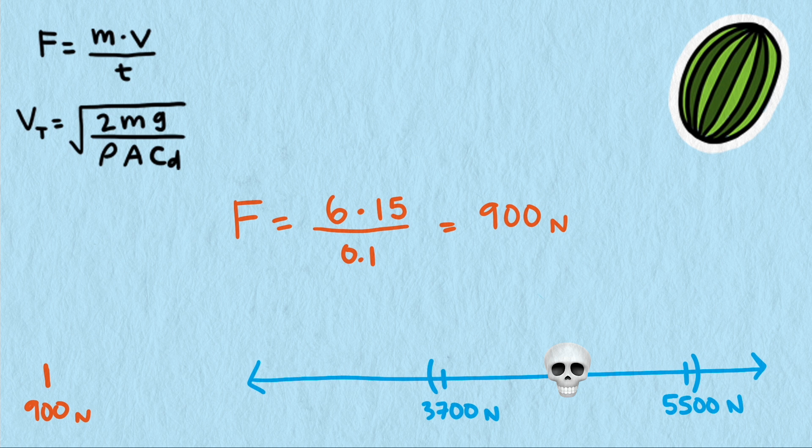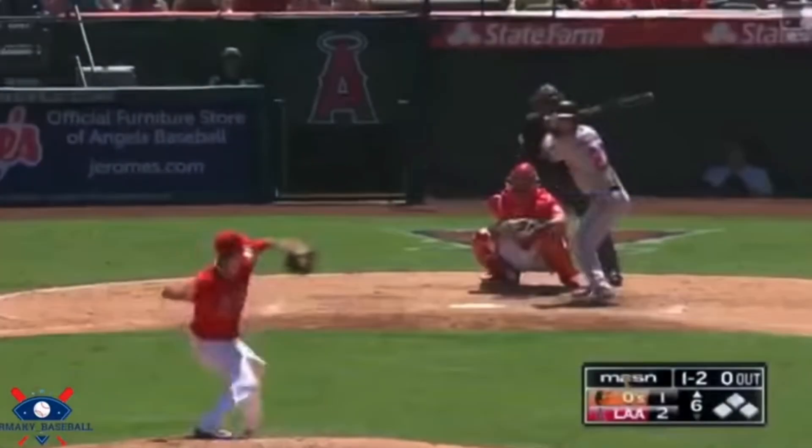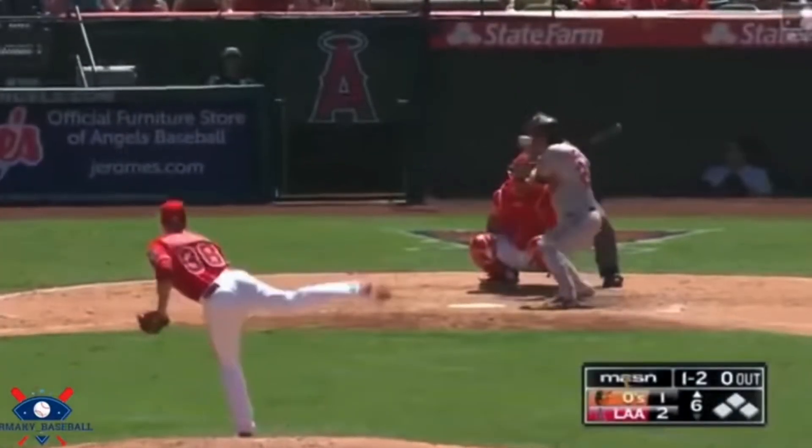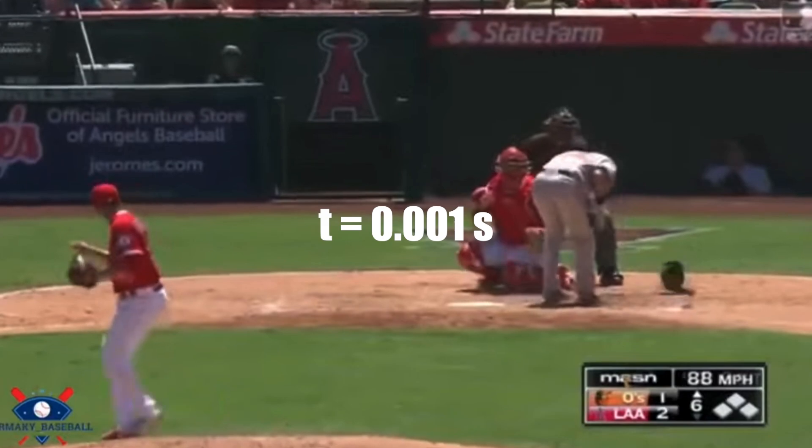This watermelon scenario actually points out a really important part of our impact force equation, contact time duration. If our watermelon behaved more like our baseball and remained in contact for only 0.001 seconds, we quickly go from 900 newtons to 90,000 newtons. A huge difference.